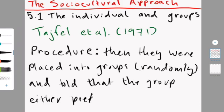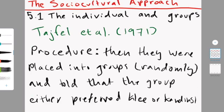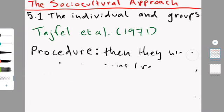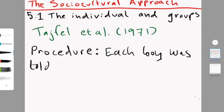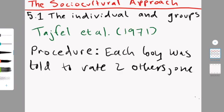Then each boy was asked to award points to two other boys. One of the boys was someone from their in-group, so if they liked Kandinsky then one of the people was a person who liked Kandinsky, and then the other person they had to rate was someone who liked Klee. The only information they got about these other boys was a code that referred to the participant, like a code name, and then it also said which group the person was from. When I say award points, they were just randomly giving out points.